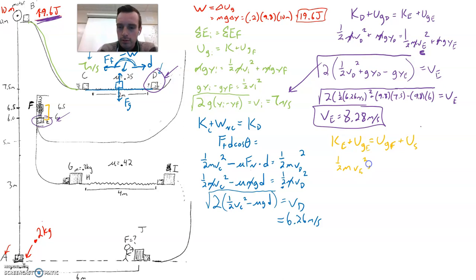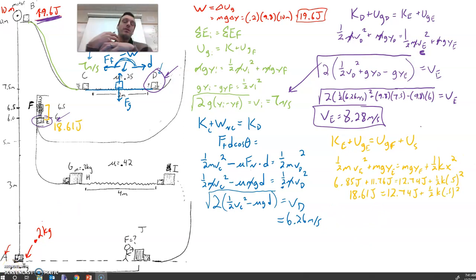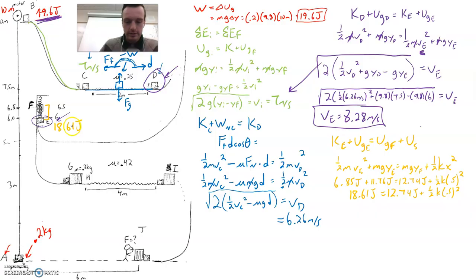One-half MVE squared plus MGYE equals MGYF plus one-half K X squared. K is the spring constant, X is the compression distance, how far the spring is stretched in meters, and that's squared. And so the bummer here is that we can't cancel mass because not every term has a mass. The total energy at point E was 18.61. If we know this total energy, it's going to make our life a lot easier moving forward because from points E all the way through G we're not going to be losing any from a non-conservative force.